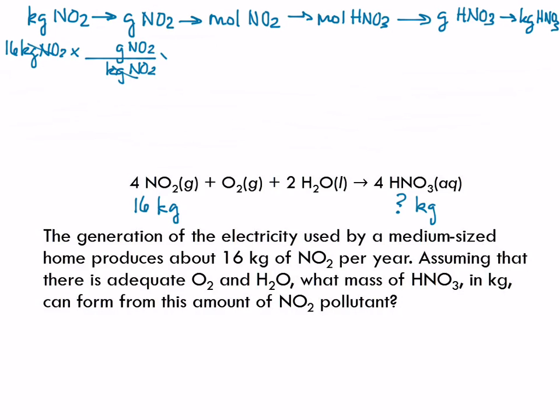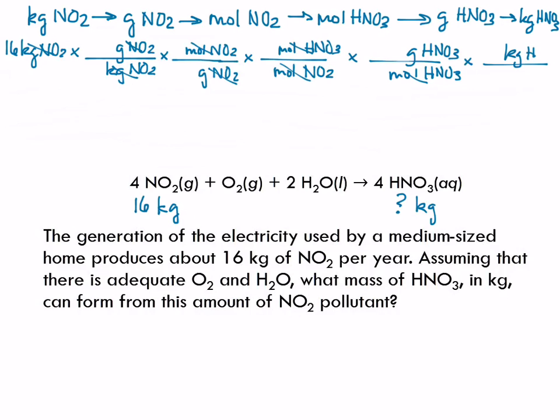From grams of NO2, I'm going to moles. Grams of NO2 will be on the bottom so the units work out. Next up is moles of HNO3, and moles of NO2 is on the bottom. Then I've got grams of HNO3 and moles of HNO3 on the bottom. And last, I'm very impressed with myself for fitting that on there, HNO3 kilograms divided by grams of HNO3. Any questions about how I did that part?